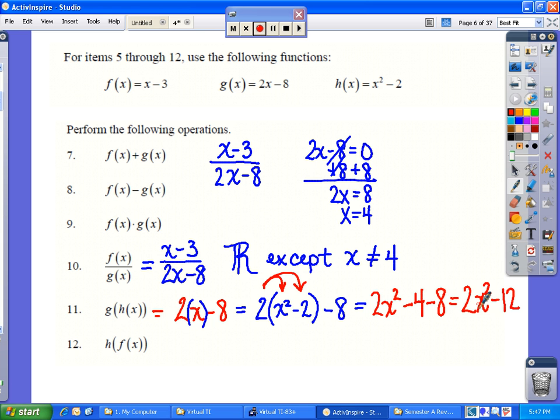Going on to number 12, we have another composition, h of f of x, which means the f of x function is going to be substituted for x in the h of x function. I'll start by writing h of x, which is x squared minus 2. I'm going to put parentheses around the x, because that's what's going to be replaced, and I'm going to substitute f of x in that place. I will therefore get x minus 3, the quantity squared minus 2.